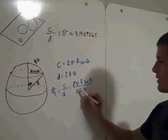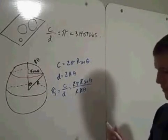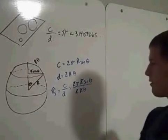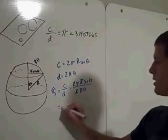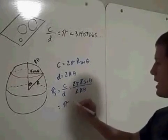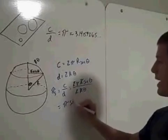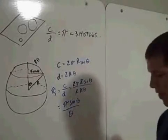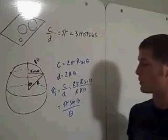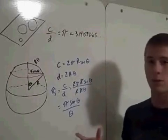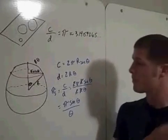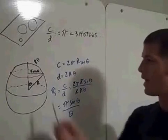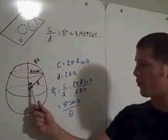The 2s cancel and the Rs cancel, so spherical pi equals π·sin(θ)/θ. This means the value of spherical pi is not constant — it depends on the angle theta.